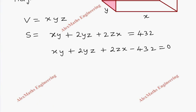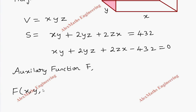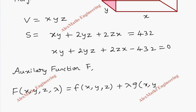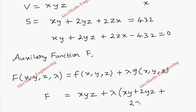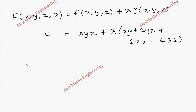Now we write the auxiliary function capital F in terms of x, y, z, and lambda. This capital F equals f(x, y, z) plus lambda times g(x, y, z), where f is the volume xyz and g is the constraint. So capital F equals xyz + lambda times (xy + 2yz + 2zx − 432).